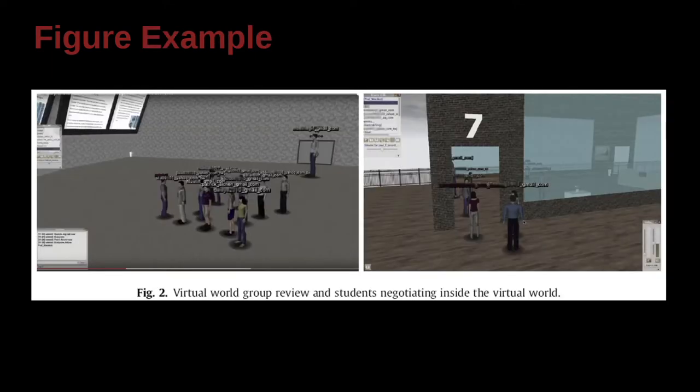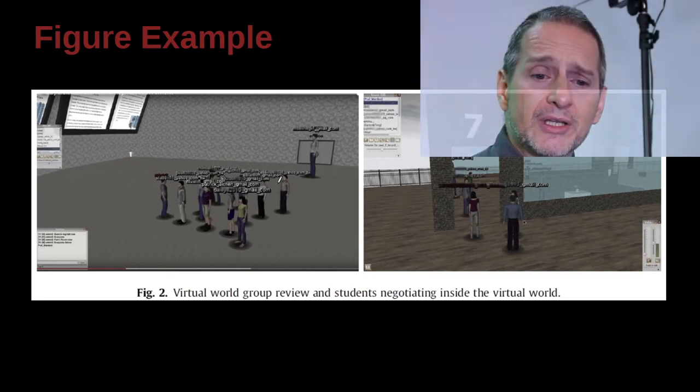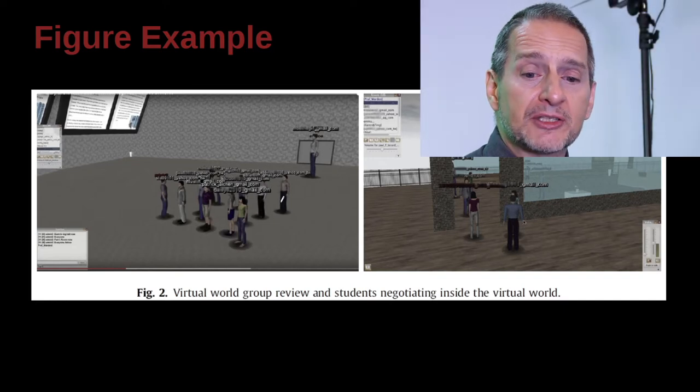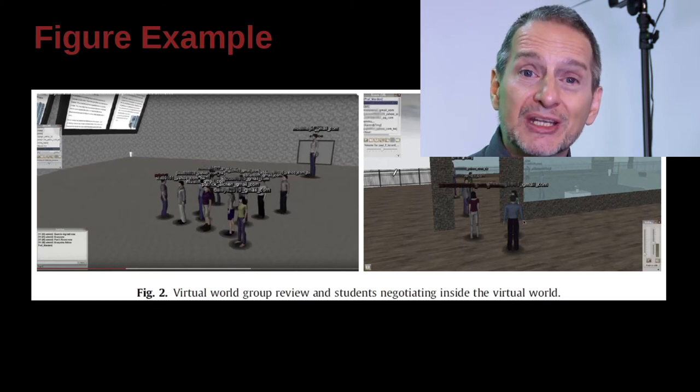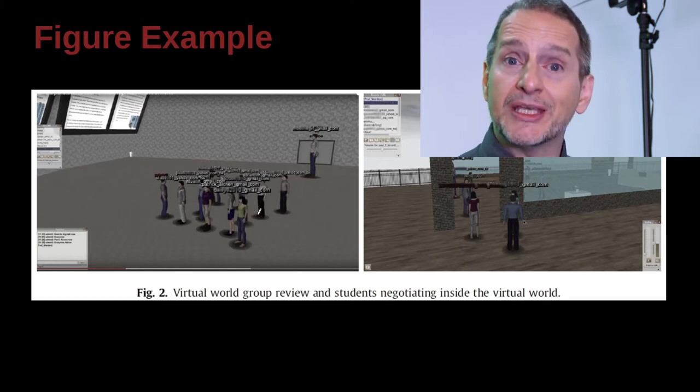Now here's some examples. The best way to understand figures is just to jump into examples. Here is figure two, virtual world group review and students negotiating inside the virtual world. So it's two screen captures from a research project, and you can see the screen capture is of a virtual space where people are these other avatars, the virtual people inside the virtual world. So what is so helpful about this picture?